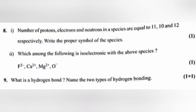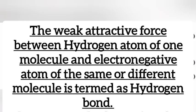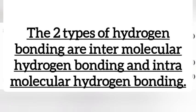Question 9: What is a hydrogen bond? Name the two types of hydrogen bonding. Answer: The weak attractive force between hydrogen atom of one molecule and electronegative atom of the same or different molecule is named as hydrogen bond. The two types of hydrogen bonding are intermolecular hydrogen bonding and intramolecular hydrogen bonding.